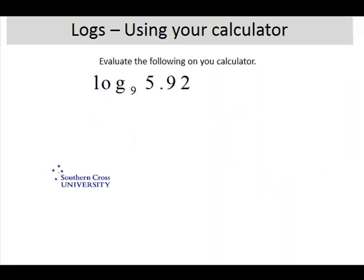And then the next one, which will be the last question. Here we've got a base of 9. That's very unusual, very atypical. So we need to use the change of base theorem to write this as the log of 5.92 over the log of 9, or if you prefer, natural logs.